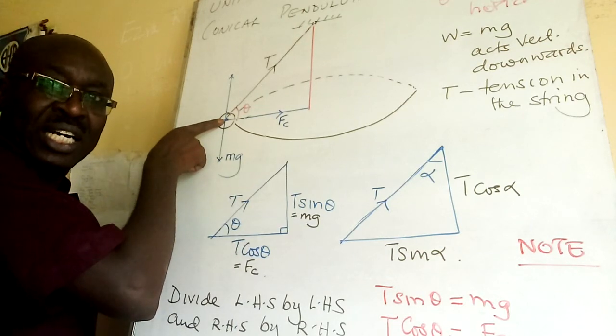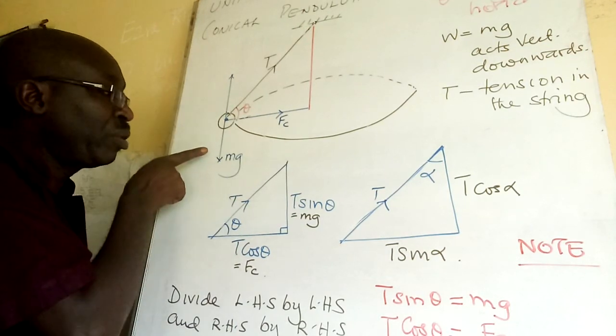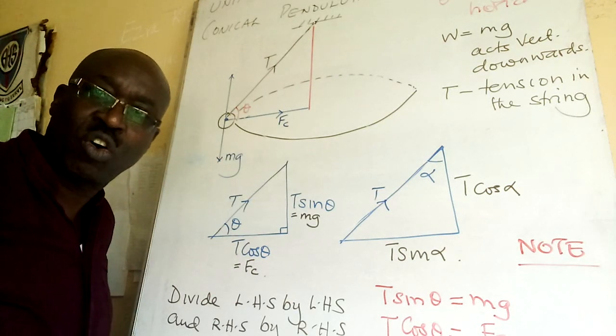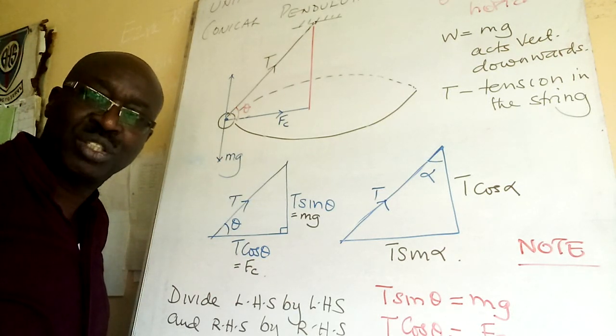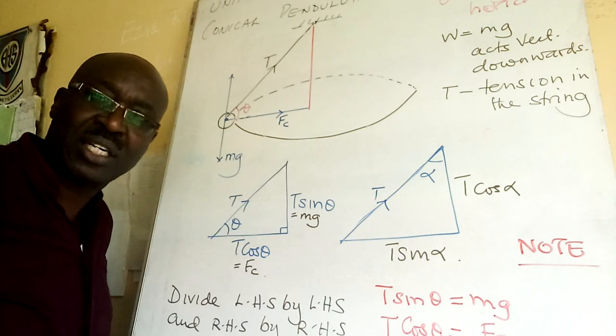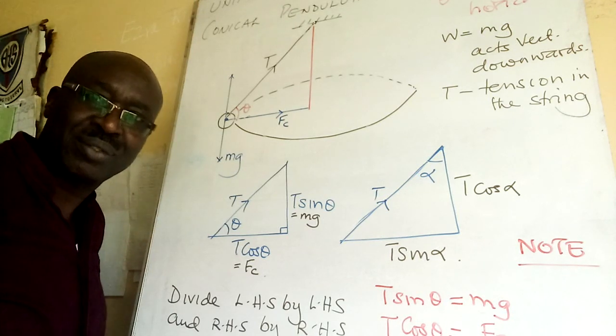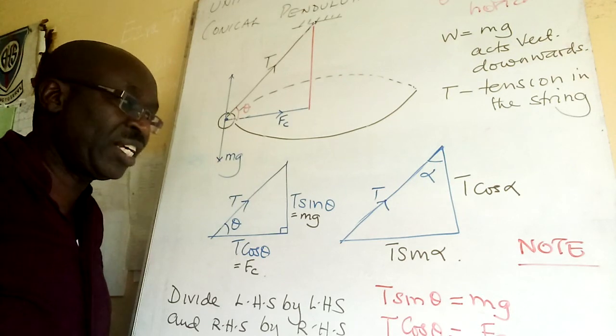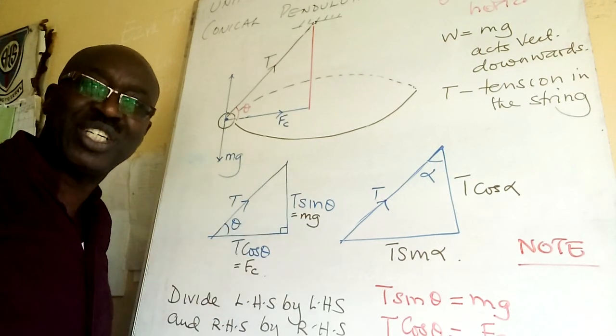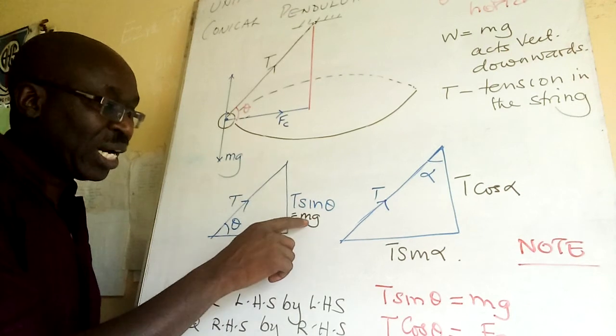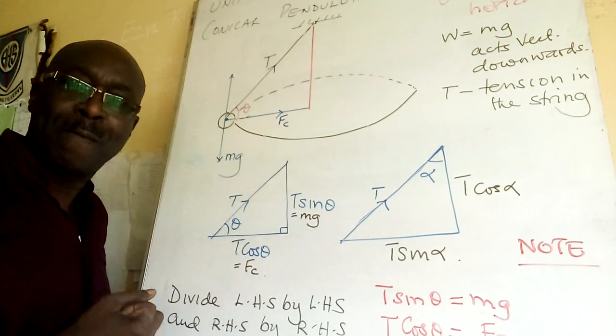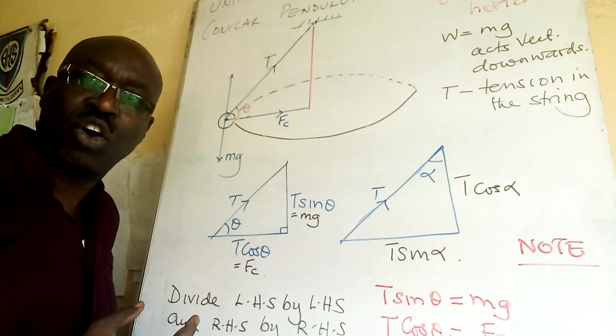Force vertically I have a force that will be equivalent to mg. From Newton's third law of motion, action and reaction are equal but act in opposite direction. That's why I have T sin theta is equal to mg.